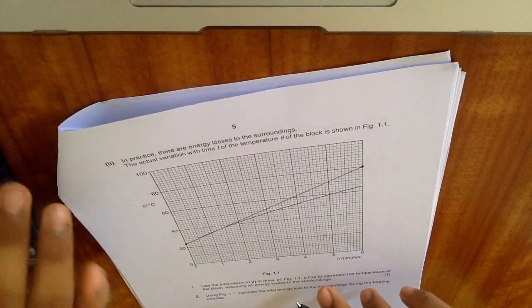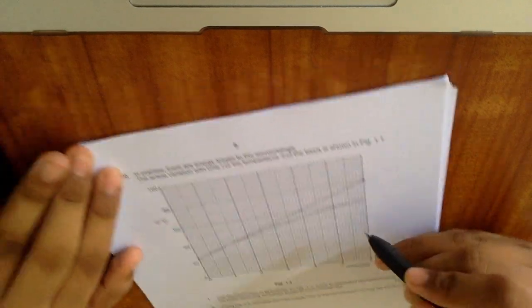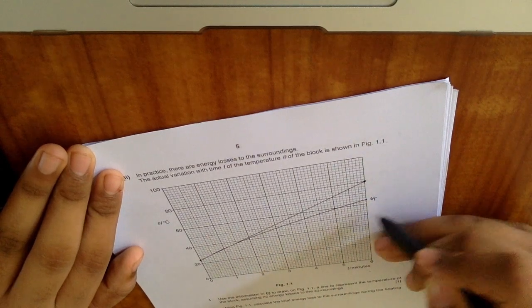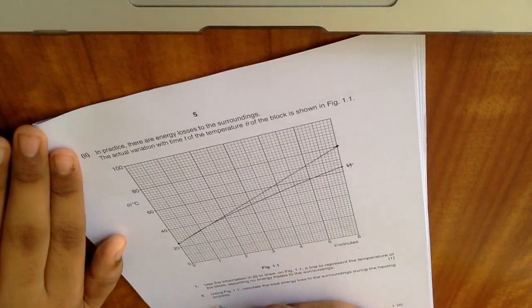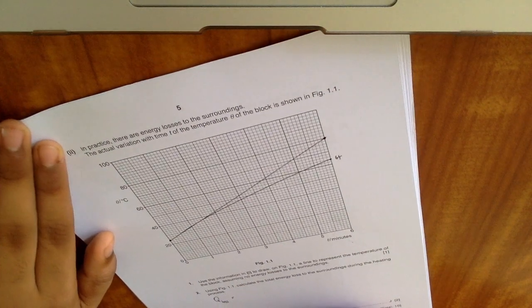All right, so the first thing you have to say is you want the total heat loss, right? So in the end you can see it's actually 64 degrees celsius. So you have to calculate Q loss is equal to mc delta theta.